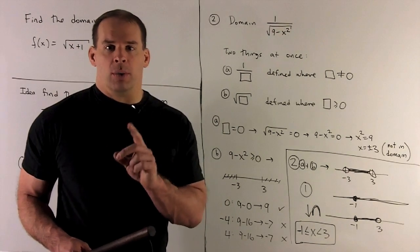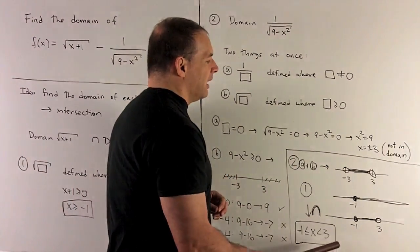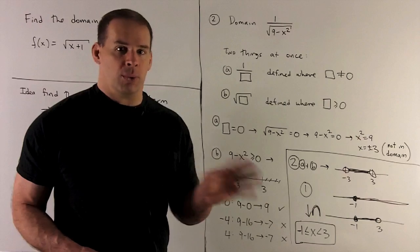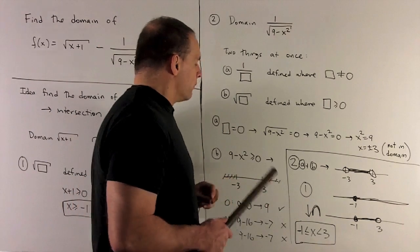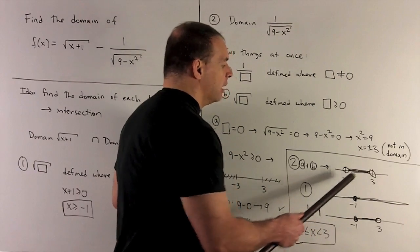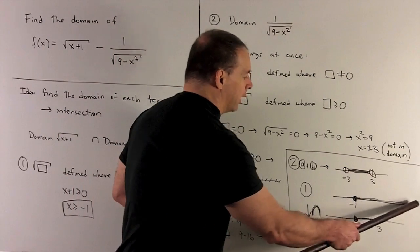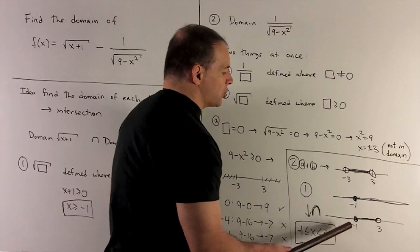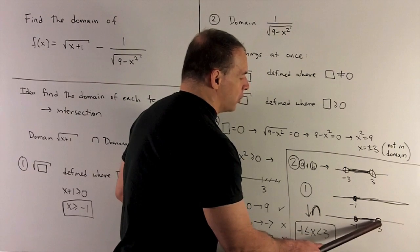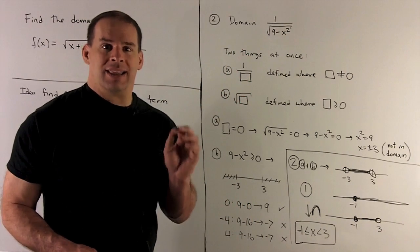Now we have both domains, so we put each on a real number line separately. The rule is: take vertical lines — if a point lies in both domains, we keep it; if it's in only one, we throw it away. The domain for Term 2 is the open interval (-3, 3). The domain for Term 1 starts at -1 (included) and goes to the right. Taking the intersection, we start at -1, include it, go right until we hit 3, which is excluded. So the domain is -1 ≤ x < 3.